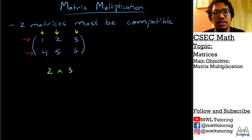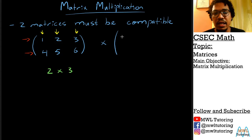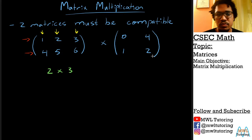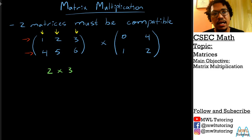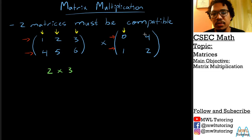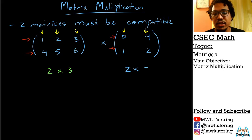Now, let's say I want to multiply that by a different matrix — let's say I want to multiply it by 0, 4, 1, 2. This matrix here has 2 rows and it also has 2 columns, so this matrix is what we call a 2 by 2 matrix.